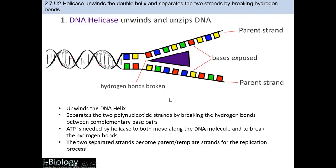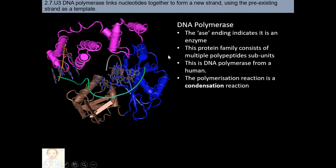This is how DNA helicase unwinds and unzips DNA, attaching in the place where it will unwind and separating the two strands. DNA polymerase also has a very beautiful structure including multiple polypeptides — one, two, three, four — with interactions between them. This protein family consists of multiple polypeptide subunits. Polymerization is a condensation reaction, meaning water is lost as nucleotides are joined.